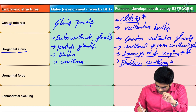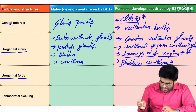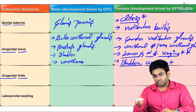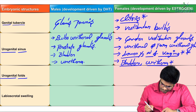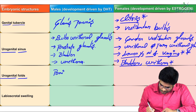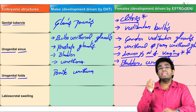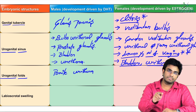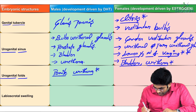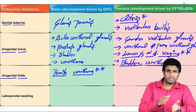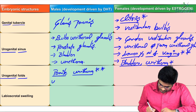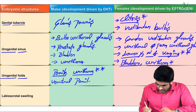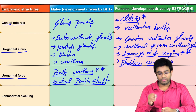The urogenital folds develop into — in males — penile urethra, which is the part of the urethra present in the penis, and the ventral aspect of the penile shaft. If they specifically mention penile urethra, it is derived from the urogenital folds.